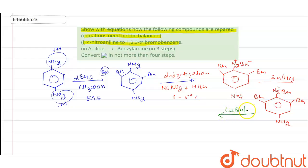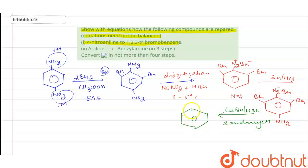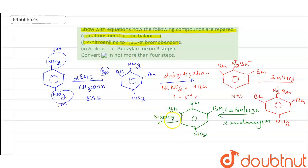Next, we carry out the Sandmeyer reaction of this compound — reaction with CuBr in presence of HBr. The product formed replaces N₂Br with Br, giving us a compound with three Br substituents and an NO₂ group.